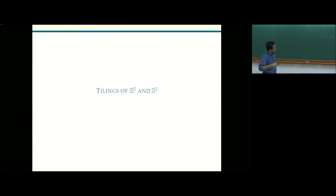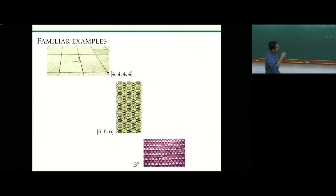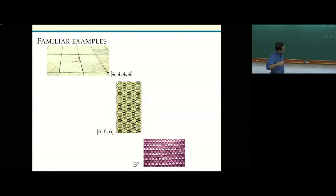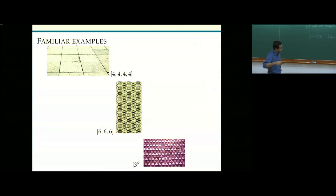Before going to hyperbolic tilings, let me talk about tilings of the Euclidean plane and the sphere. Here are some examples you may have seen in day-to-day life. The square tiling has vertex type 4, 4, 4, 4. The hexagonal tiling — this picture is cropped from a photo taken at the Taj Mahal, reflecting Islamic and Persian architecture's use of such tilings — has vertex type 6, 6, 6. And this triangular tiling is from a site in Pompeii.